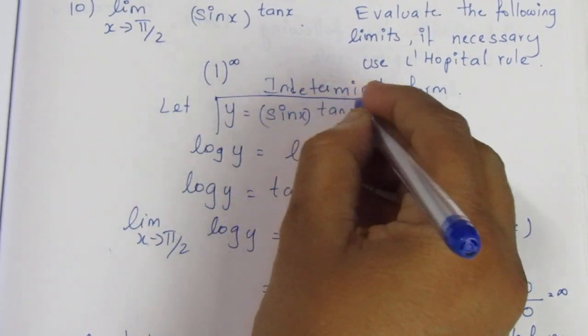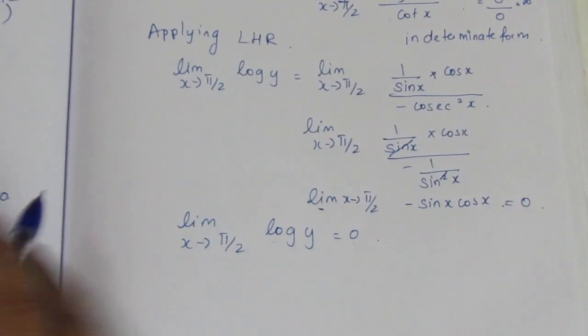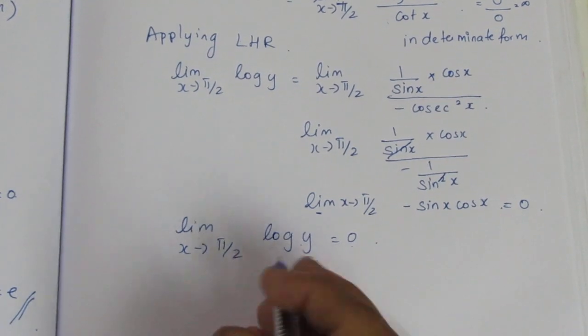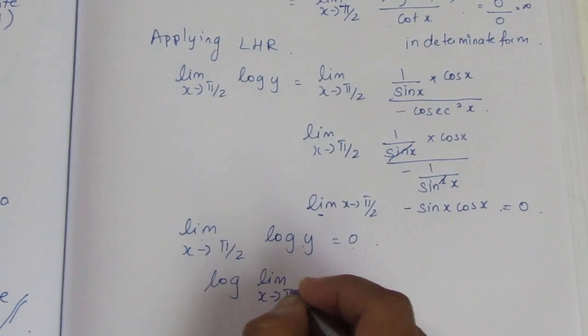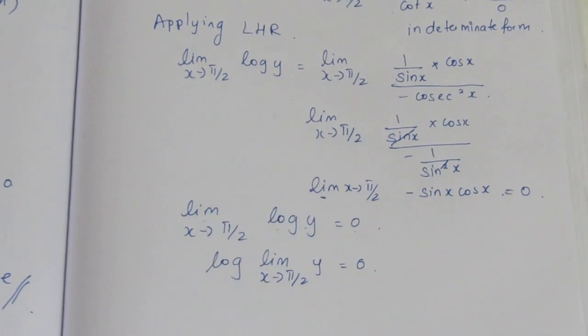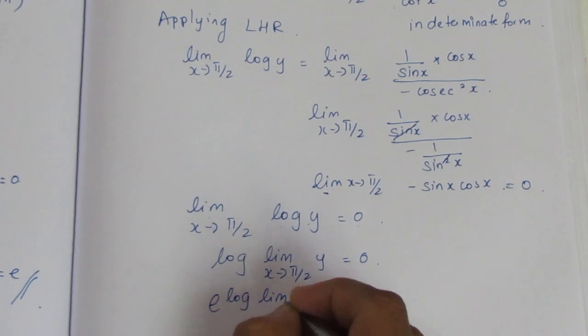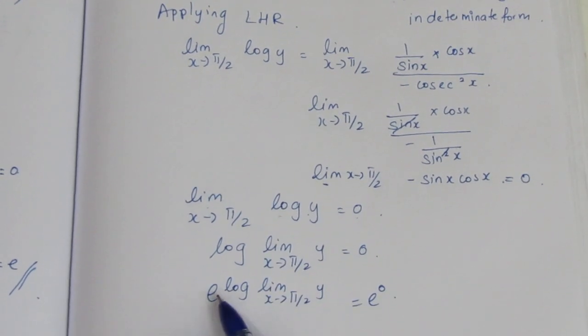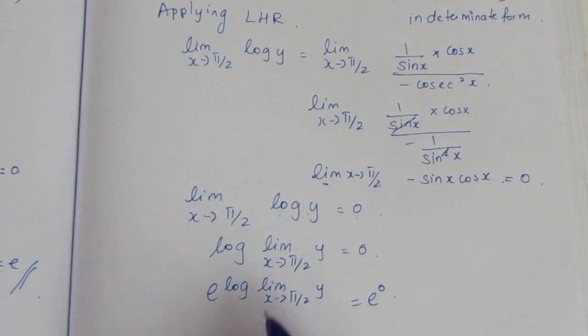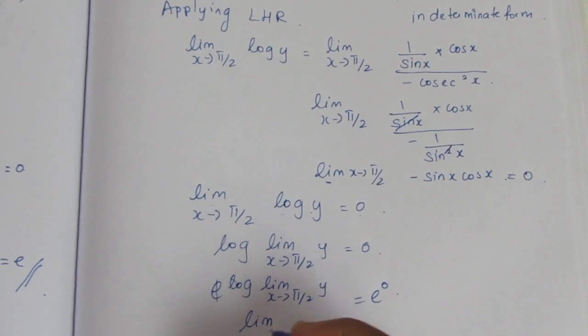Substituting x equals π/2, we get minus sin π/2 times cos π/2, which equals 0. So limit x tends to π/2, log y equals 0. To find y, we take both sides as exponents: e to the power log y equals e to the power 0. The e and log cancel on the left side.